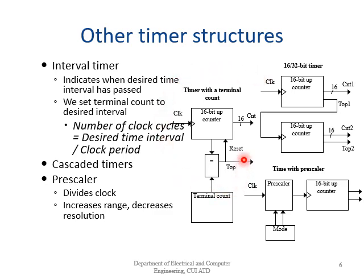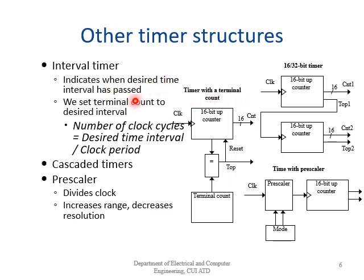In addition to simple timers and counters, there are more advanced structures. The first is a timer with a terminal count: two 16-bit timers connected in cascade or series act as a 32-bit counter. We can also use a prescaler, which lets us select different values to slow down the clock. The terminal count indicates when a desired time interval has passed.